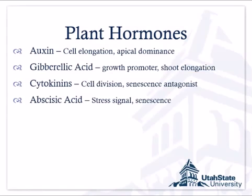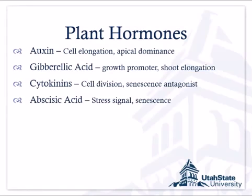Another hormone is abscisic acid, which is a stress response hormone. Originally it was thought to be involved in causing leaves to abscise or drop off, which turns out not to be the case — so it's a bad name. But it's very much involved in drought stress. If the roots sense they're too dry, they produce abscisic acid, which moves up through the plant to the leaves signaling they're running out of water, and the stomates close so that water loss is diminished. It's also involved in senescence as the plant is shutting down.